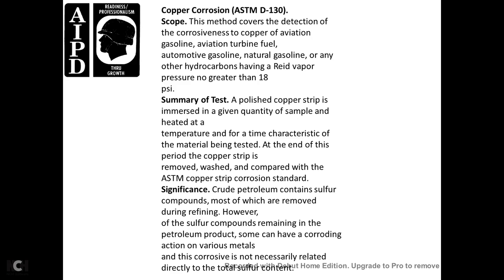Copper Corrosion — ASTM D130. Scope: covers detection of corrosive sulfur in aviation gasoline, aviation turbine fuel, automotive gasoline, natural gasoline, and other hydrocarbons with a Reid vapor pressure no greater than 18 psi. Summary: a polished copper strip is immersed in a given quantity of sample, heated for the time and temperature characteristic of the material being tested; the copper strip is then removed, washed, and compared with the ASTM Copper Strip Corrosion Standard. Significance: crude petroleum contains sulfur compounds that are removed in refining, but some remain; sulfur compounds can have a corrosive action that is not necessarily related directly to total sulfur content.